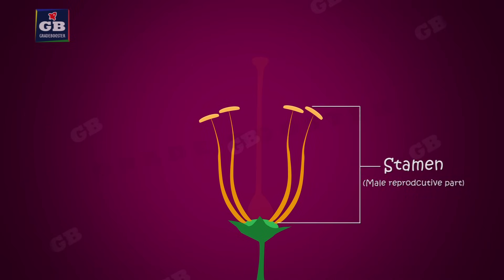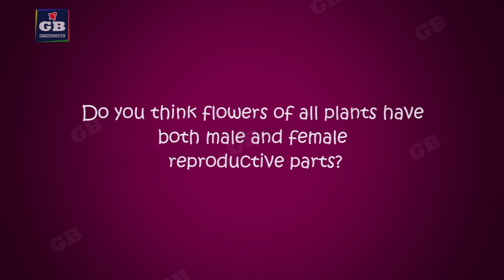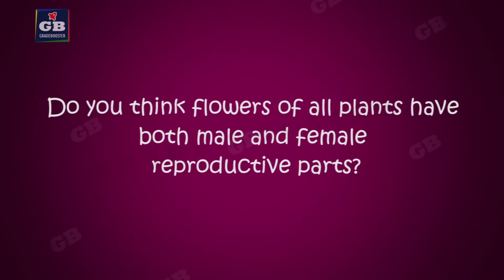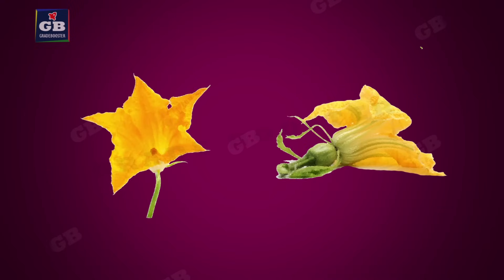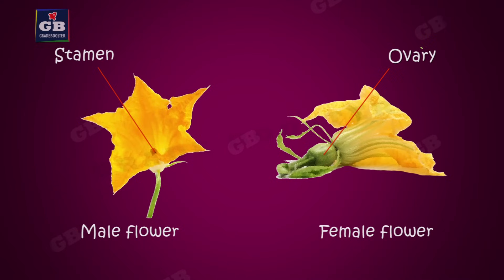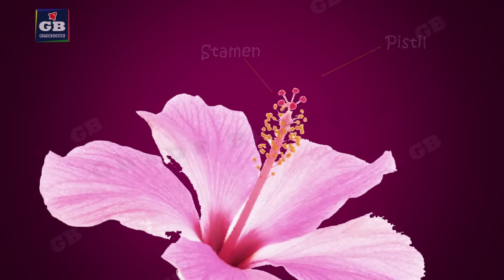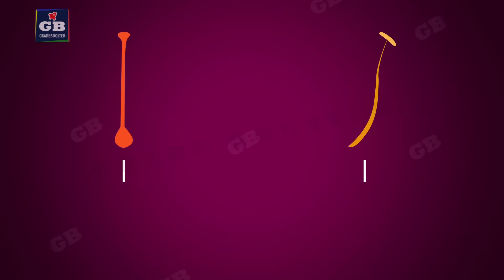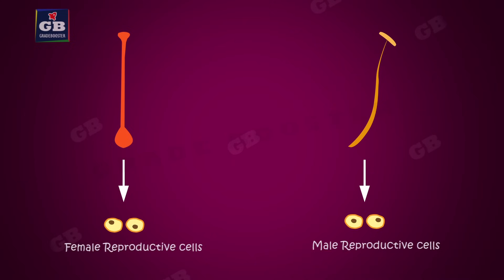The male reproductive parts are called the stamen. It has two parts: anther and filament. In plants like watermelon and papaya, the flowers are unisexual — that means male and female flowers are separate. Whereas in plants like hibiscus and mustard, the flowers are bisexual — that means a flower has both male and female parts. These reproductive parts produce the reproductive cells or germ cells.